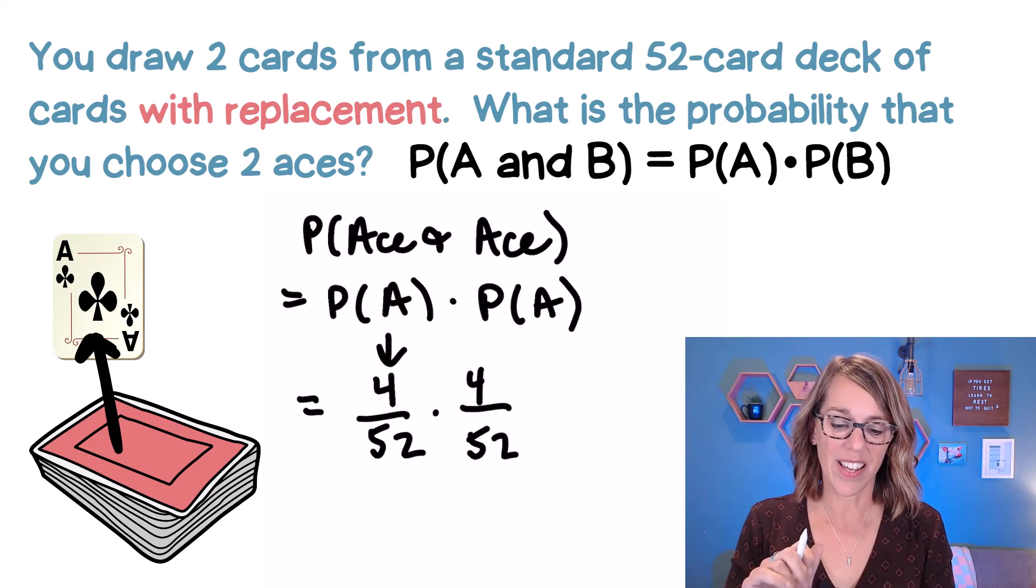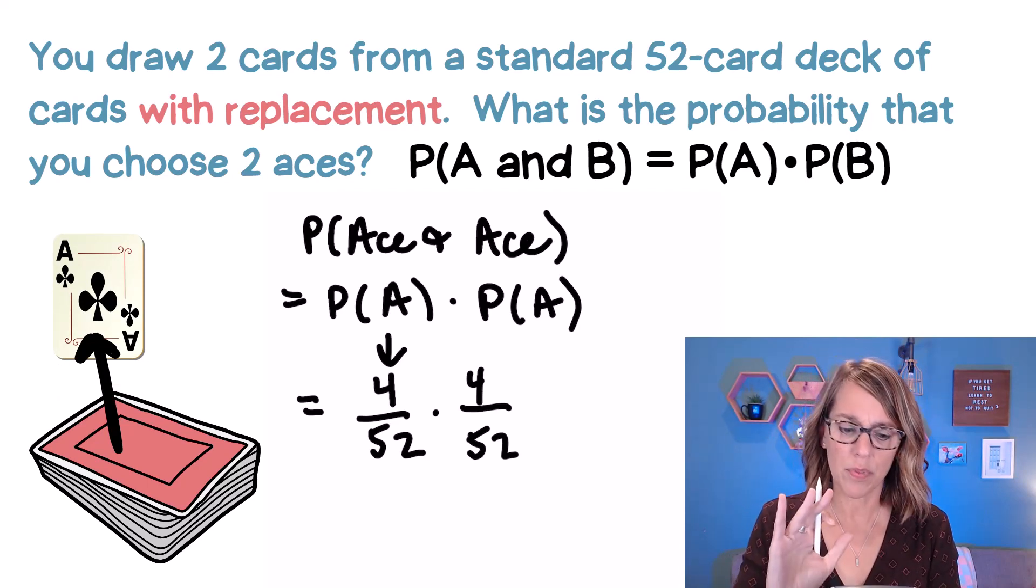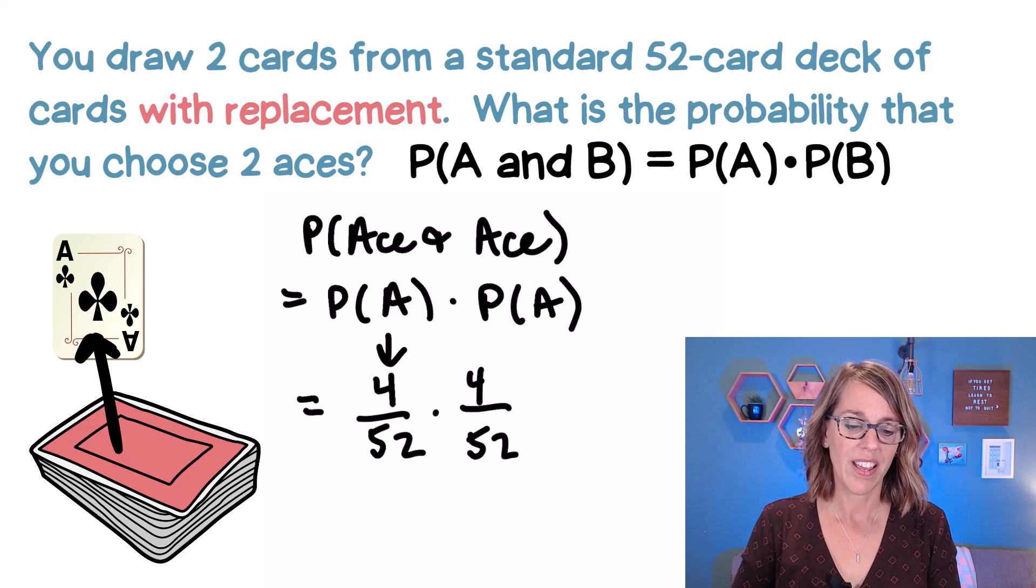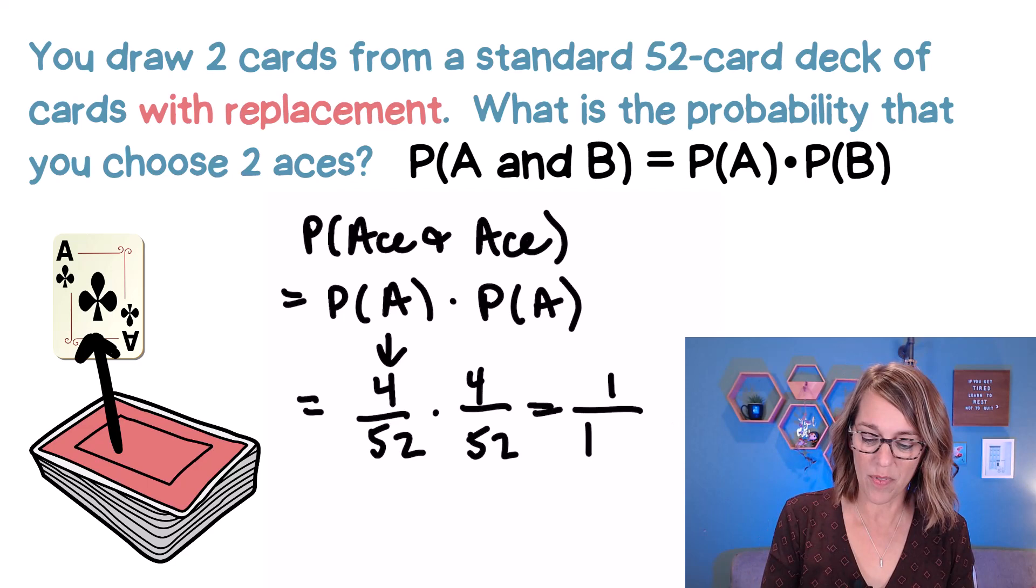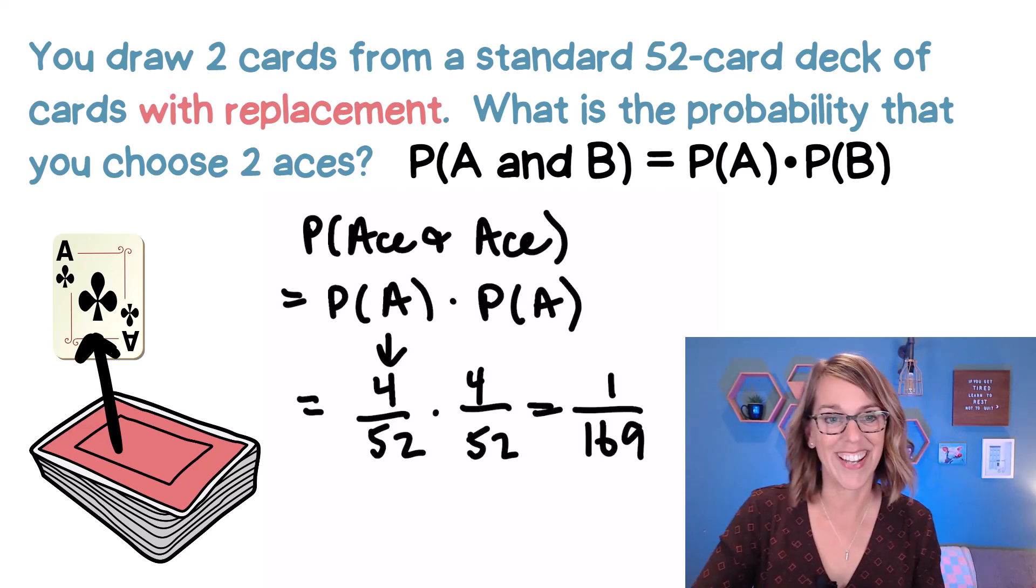If I calculate that I get 0.0059, a really small probability. Converting that to a fraction, we end up with the probability of one over 169.